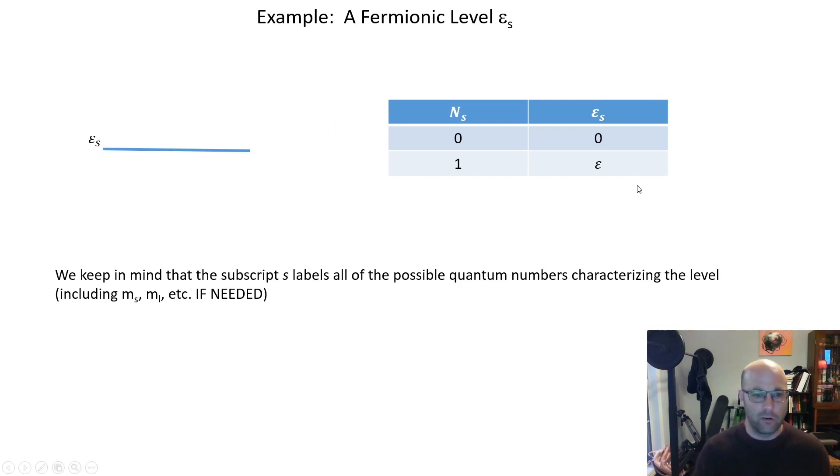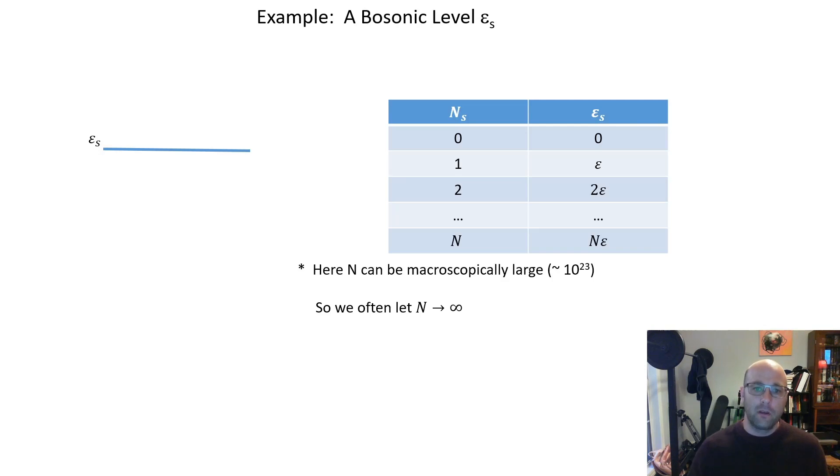For a bosonic level, same thing except now we can have from one up to n particles and then from epsilon up to n epsilon as the energy, where n can be macroscopically large. In fact, when we do the calculation of the grand partition function we're going to let it go to infinity. So in the next two mini lectures we're going to do the quantum statistical mechanics using the grand canonical partition function for bosons and fermions. We'll see you next time.